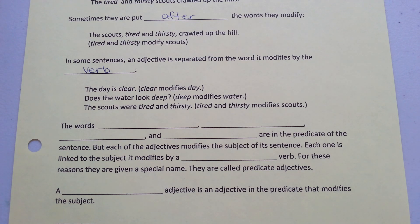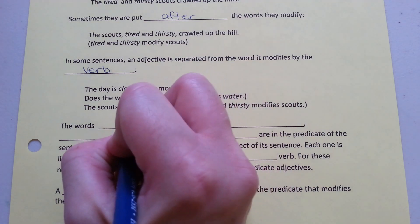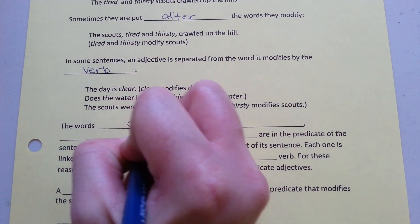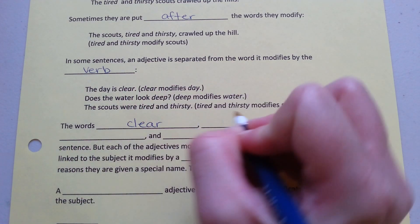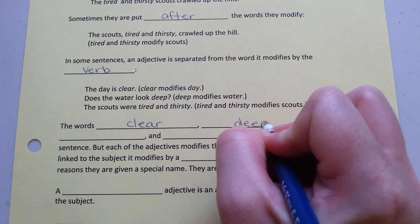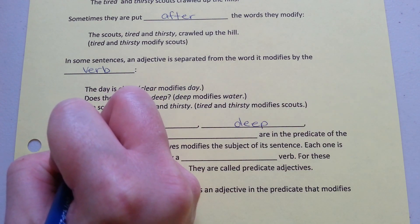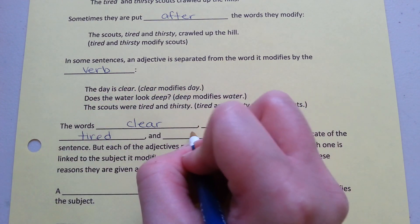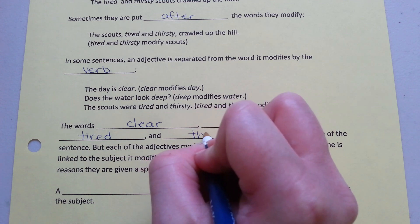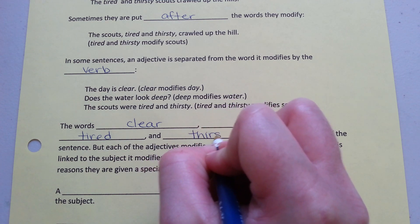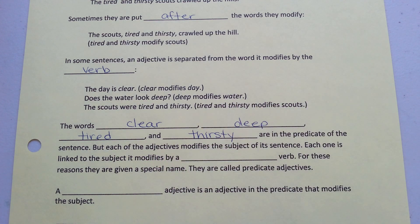'The scouts were tired and thirsty.' Tired and thirsty modify scouts. The words clear, deep, tired, and thirsty are in the predicate of each sentence.